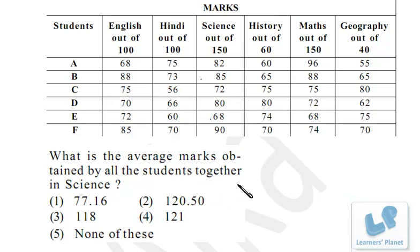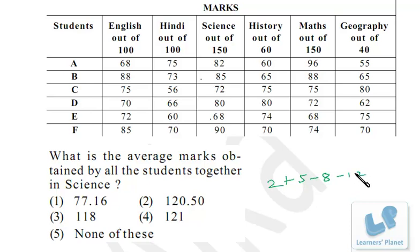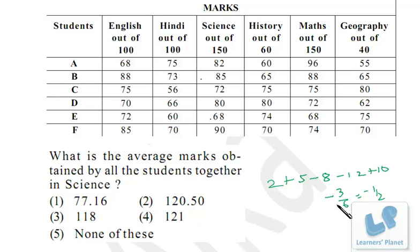Now: what is the average marks obtained by all students together in science? Science is out of 150. First, find the average percentage, then multiply by 3/2 to get average marks. I assume the average percentage to be 80. The deviations are: +2, +5, -8, 0, -12, +10. Positive sum: 2+5+10 = 17. Negative sum: 8+12 = 20. Net: minus 3. Dividing by 6 students gives minus 0.5. So average percentage is 80 - 0.5 = 79.5%.